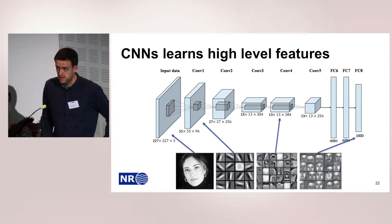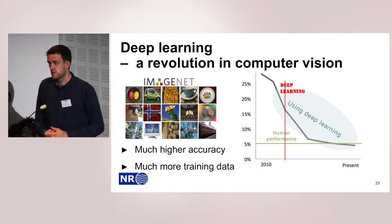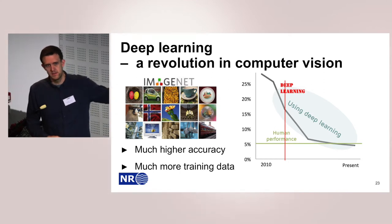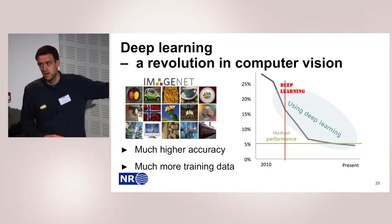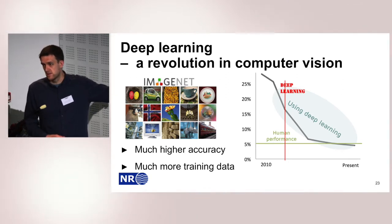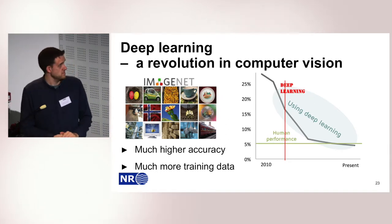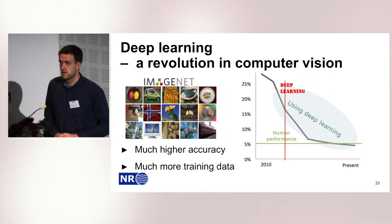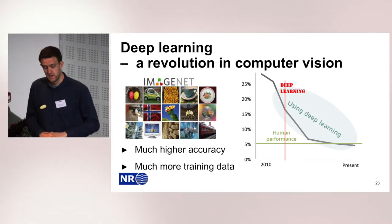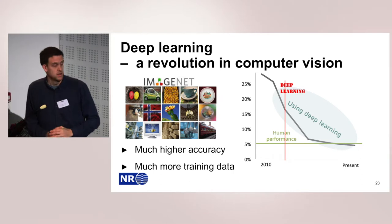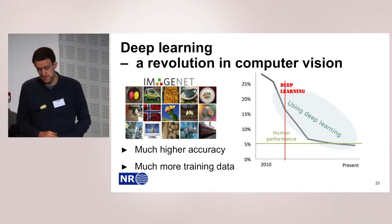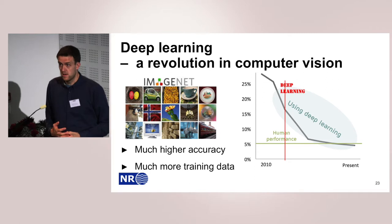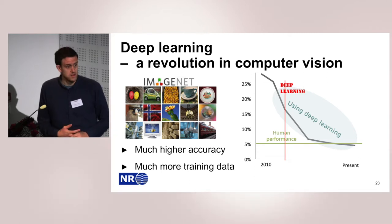Deep learning has been a revolution in computer vision. There is a very famous contest called ImageNet that consists of 1.4 million images of 1,000 different classes. Before deep learning, the best results had 75% accuracy. Then, after just two years with deep learning methods, we are approaching human performance on this classification task — that's quite a significant increase.